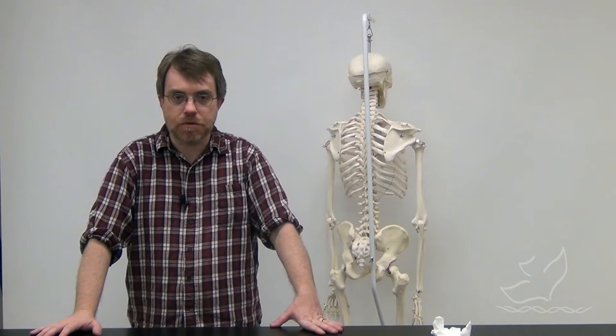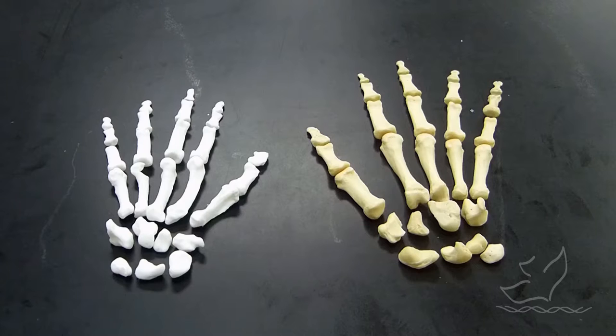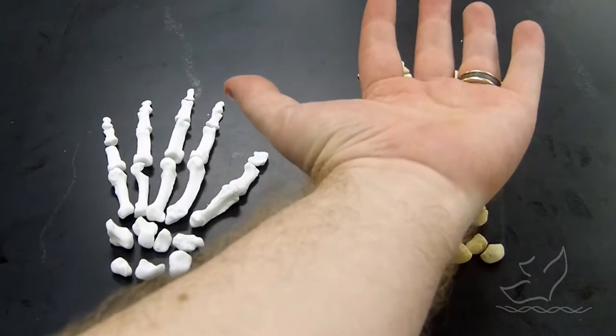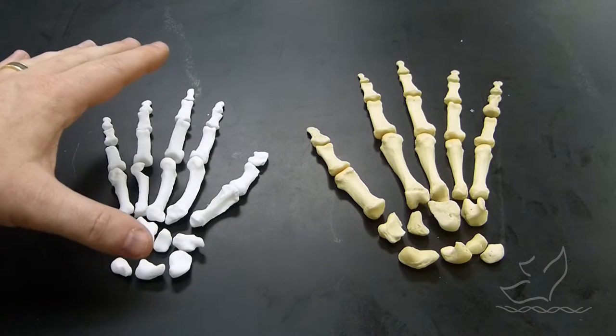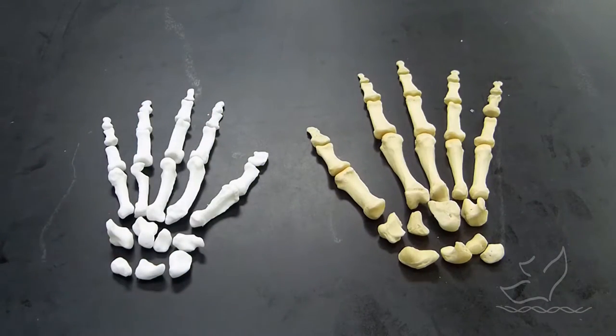So what was Homo naledi like? Well, let's look at some of the more carefully preserved bones and try to see what we can find. Here you can see, on the left is a complete right hand, a right hand of Homo naledi. And over here, we have the complete left hand of a modern human being, modern Homo sapiens. And you can see right away that they're not the same size. Naledi here is substantially smaller than modern humans.